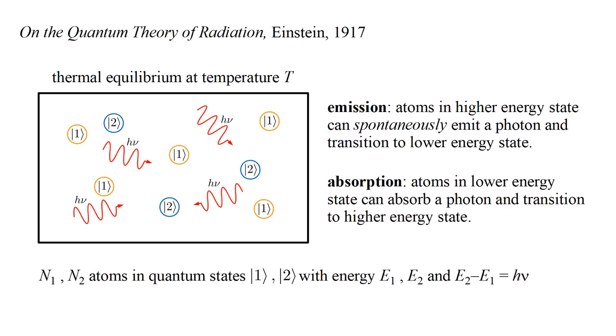Let's assume the entire system is in thermal equilibrium at temperature T. Then emission and absorption will be in balance, in the sense that there will be no net change in N-one and N-two.